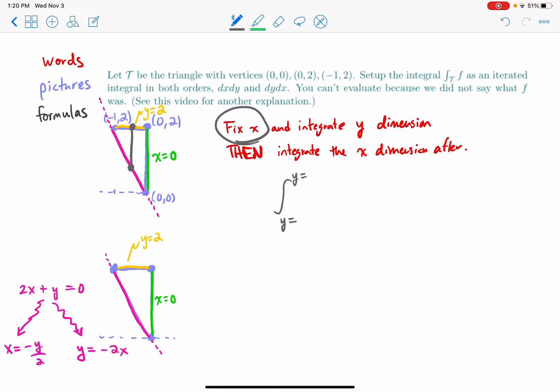So if I fix x, I've chosen an x, then my triangle is sliced at this x value giving a line segment, this gray line segment.